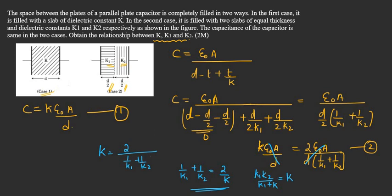k will be equal to 2 into k1 k2 divided by k1 plus k2. This is the final answer.